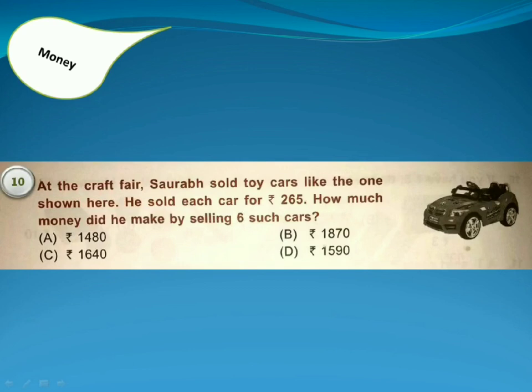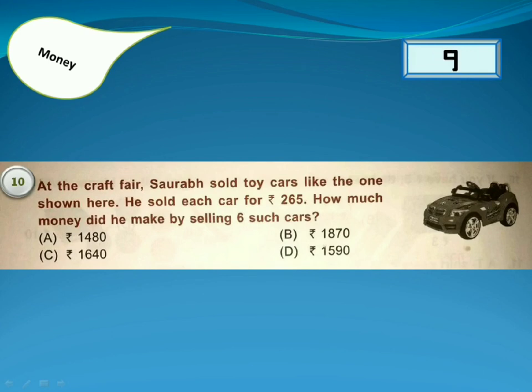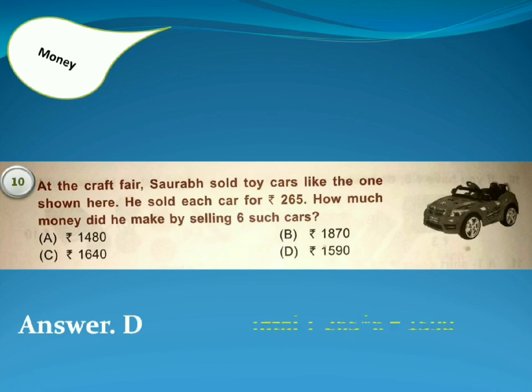His father gave him 2100 rupees, so the total is 2700 rupees. At the craft fair, Saurab sold toy cars like the one shown. He sold each car for 265 rupees. How much money did he make by selling 6 such cars? Answer is Option D, because the total is 265 into 6 is equal to 1590.